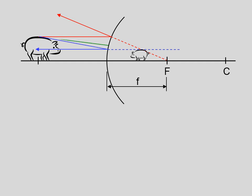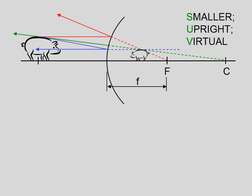If we wanted to do rule number three: start at the top of the object, head for the center of curvature, and when you hit the mirror, bounce back along that line. There is our third reflected ray. If we project that reflected ray back, you can see that any two of those rays will locate our image. So this is a smaller, upright, virtual image.